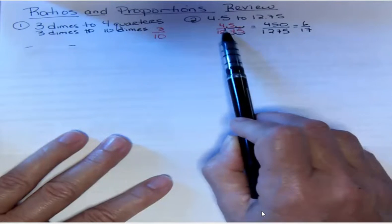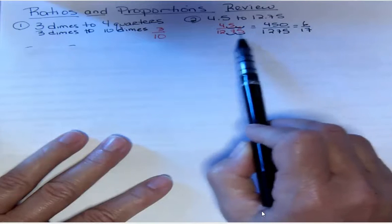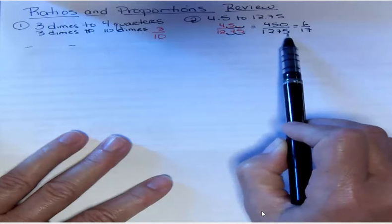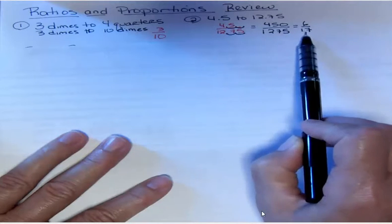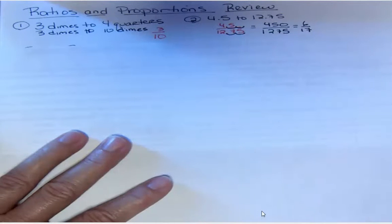When you move two places you get 450 and when you move this one you get 1275. Then how did I get 6/17ths? Well, in this particular video I'm not trying to teach you how to reduce fractions.